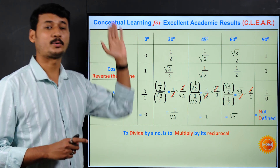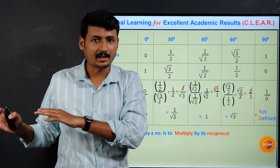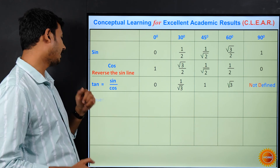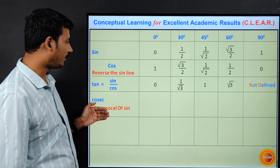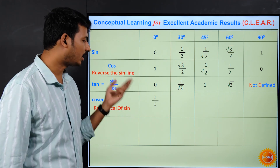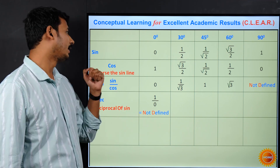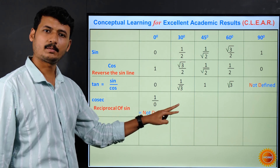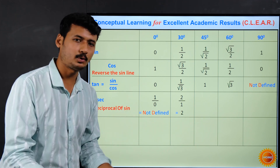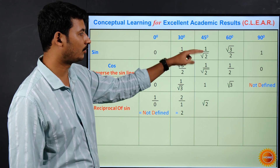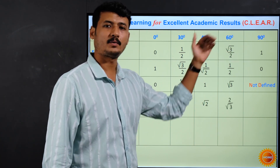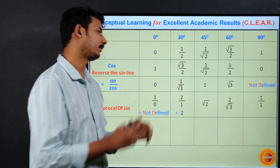The reciprocals of sin, cos, and tan give us cosec, sec, and cot respectively. For cosec, we take the reciprocal of the sine values: cosec 0° is 1/0 = not defined; cosec 30° = reciprocal of 1/2 = 2; cosec 45° = reciprocal of 1/root2 = root2; cosec 60° = reciprocal of root3/2 = 2/root3; and cosec 90° = reciprocal of 1 = 1.